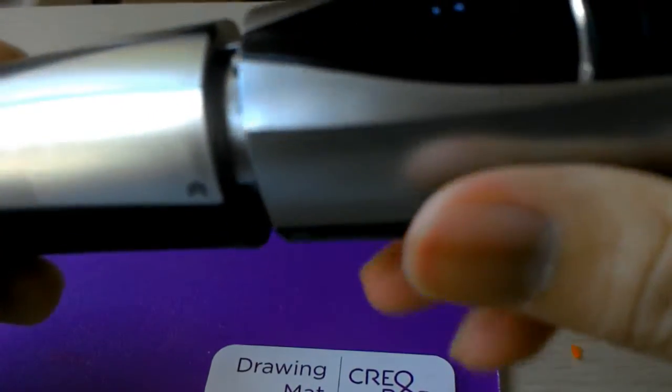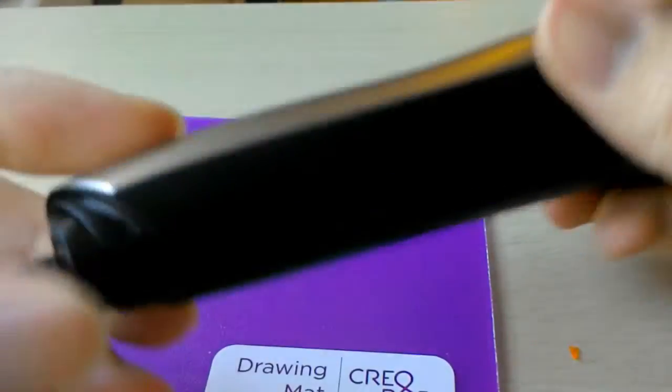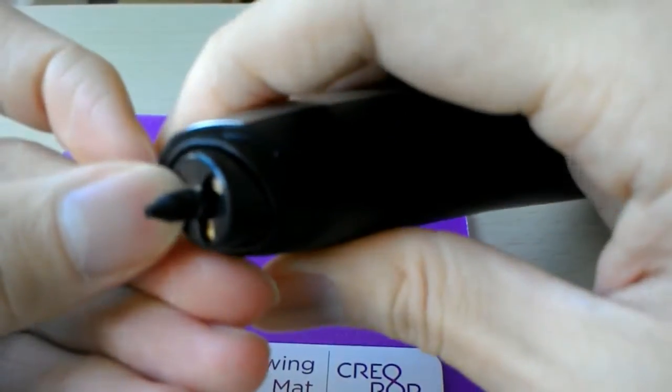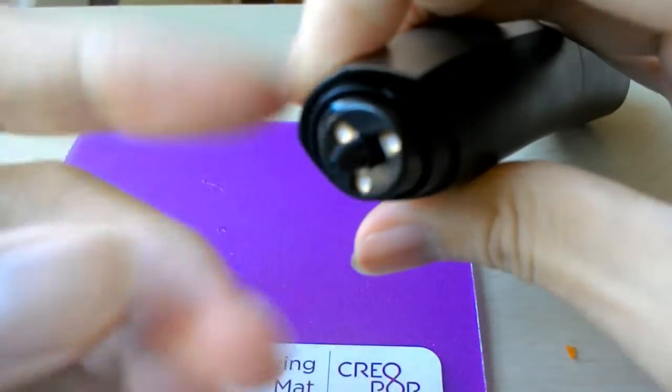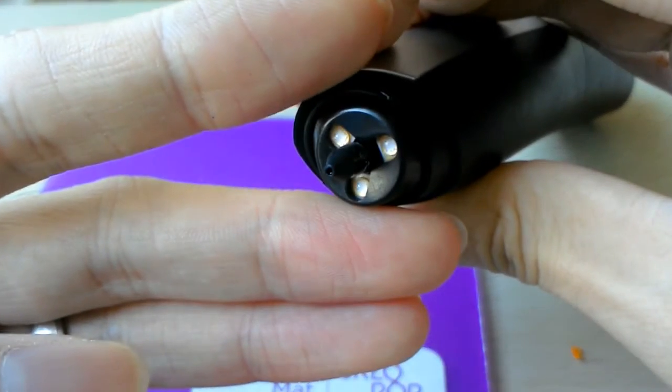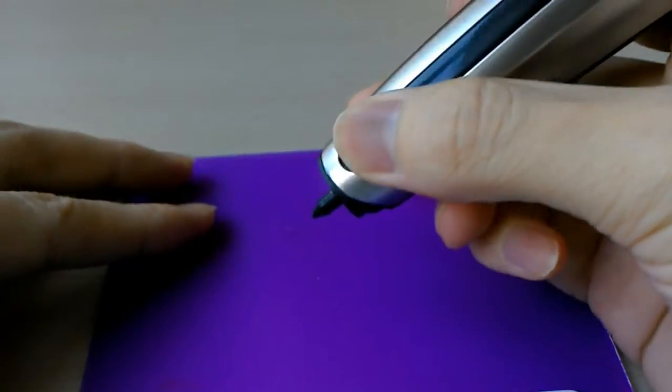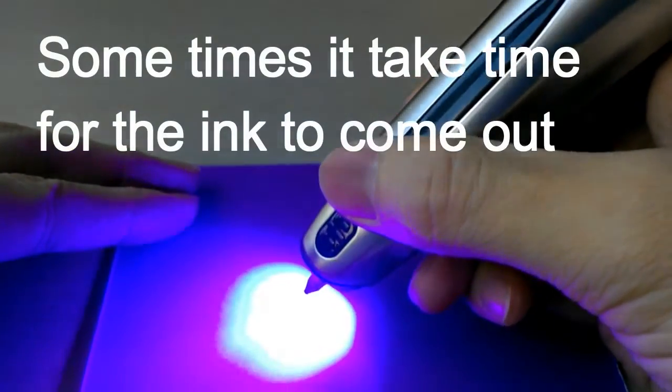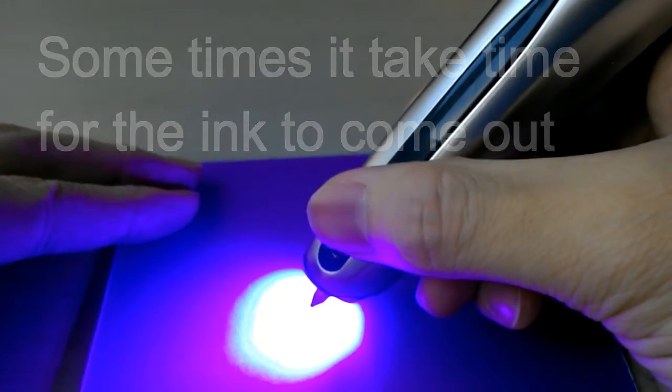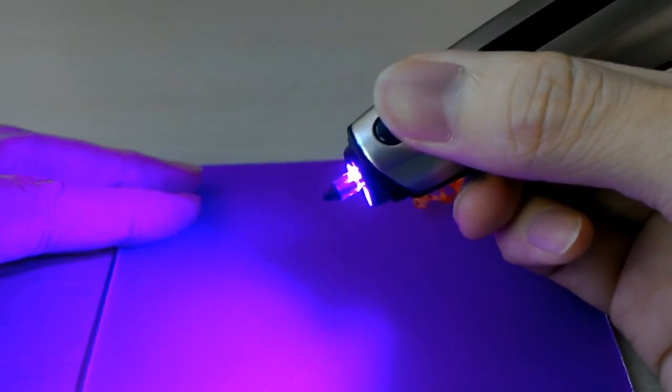And this has three very bright ultraviolet LEDs on the tip. It's really bright. This pen has three different modes. First one is just normal 3D pen, you can just draw things with this pen.